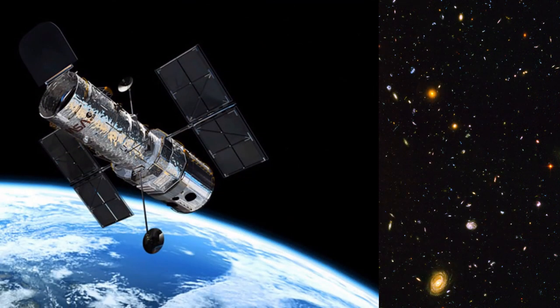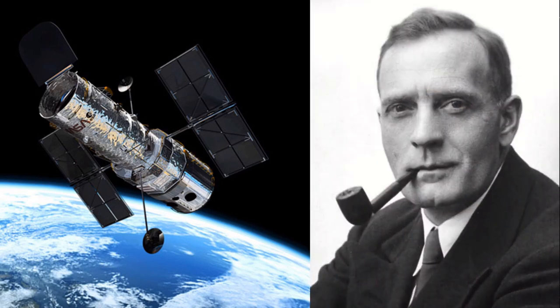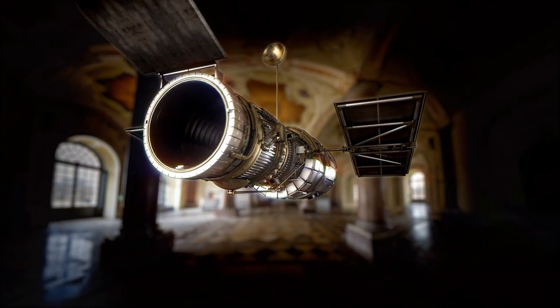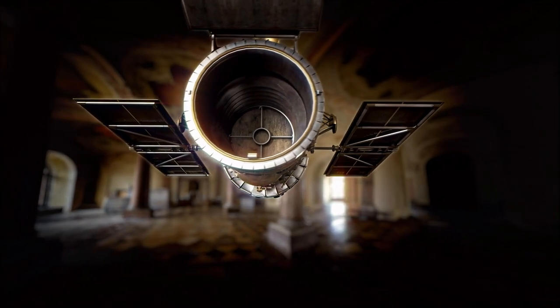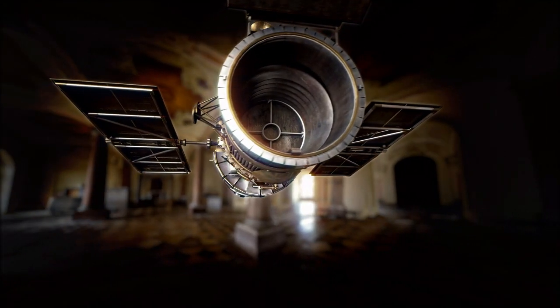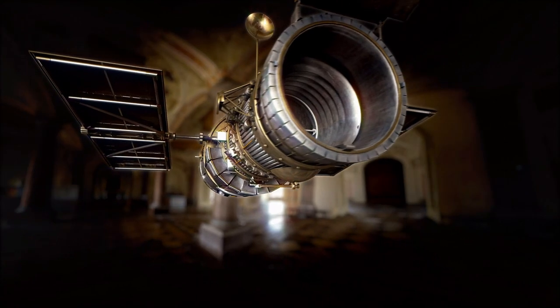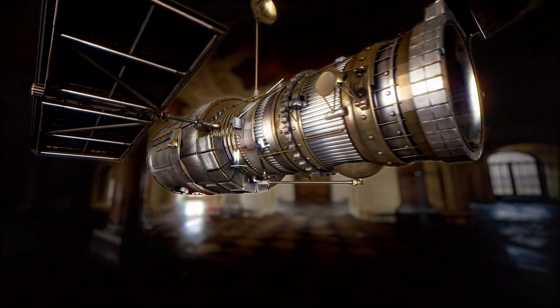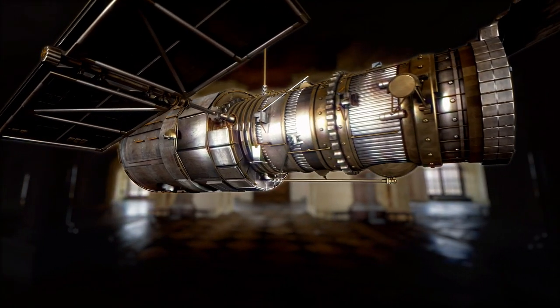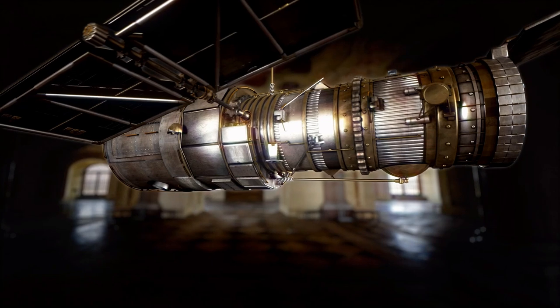The Hubble Space Telescope was launched in 1990 and still remains operational. It was named after an American astronomer, Edwin Hubble. Hubble is a Cassegrain Reflector Telescope. It is 43.5 feet wide or 13.2 meters, with a maximum diameter of 14 feet or 4.2 meters. On Earth, it would weigh around 24,500 pounds or 11,110 kilograms.